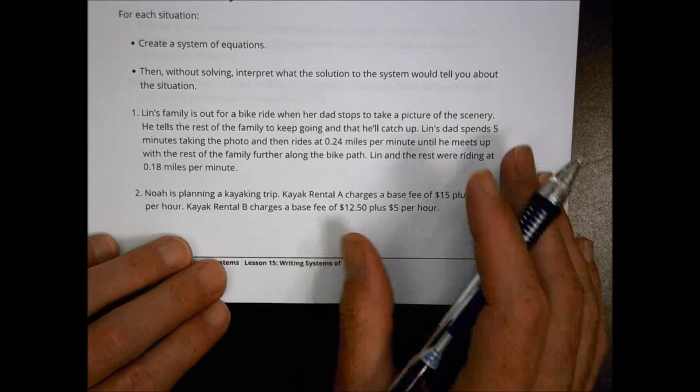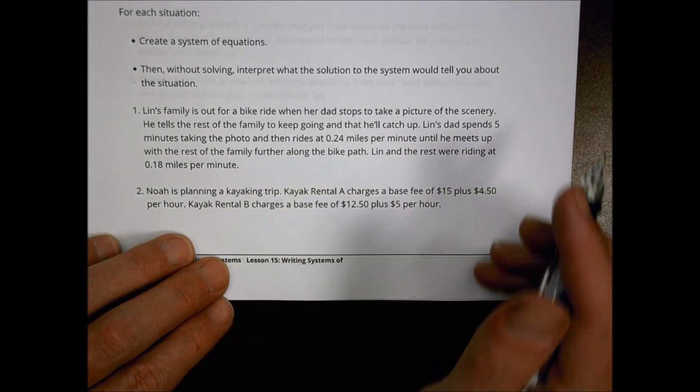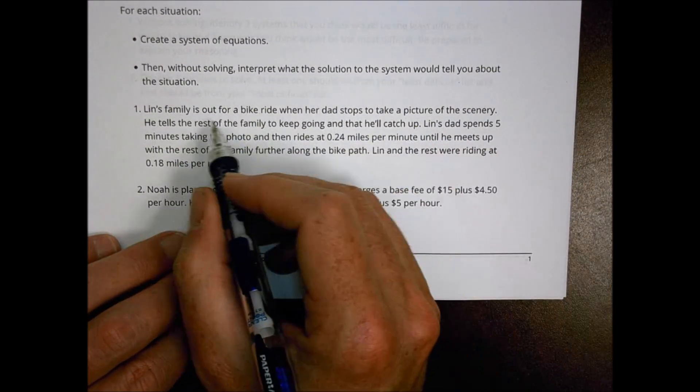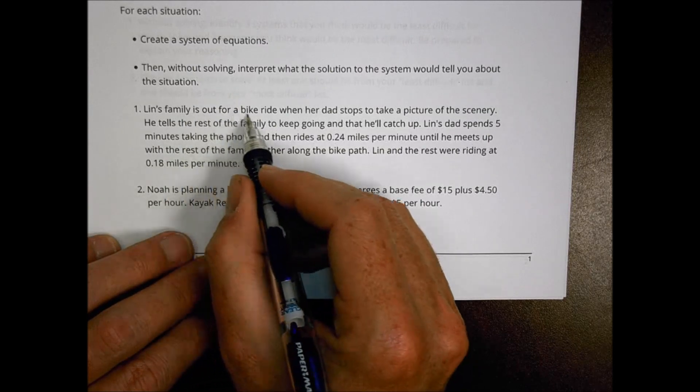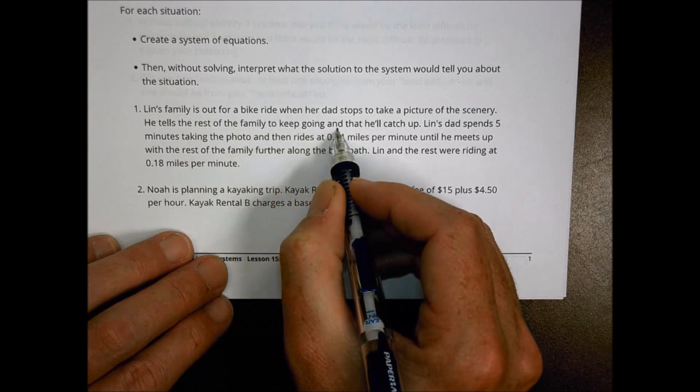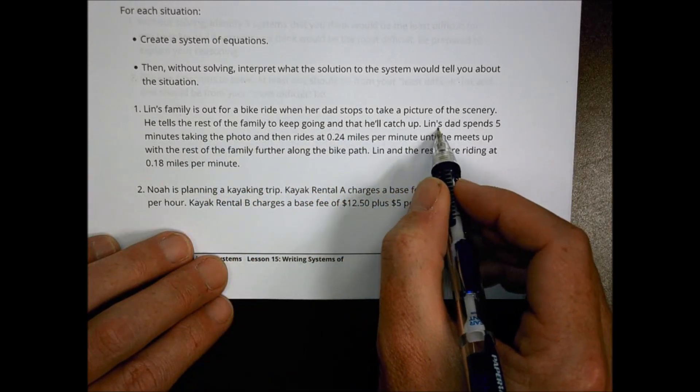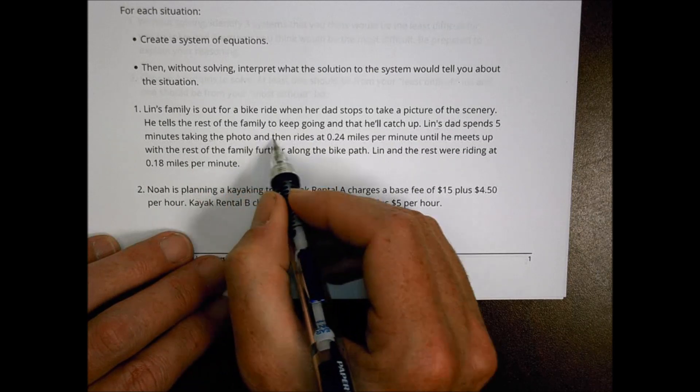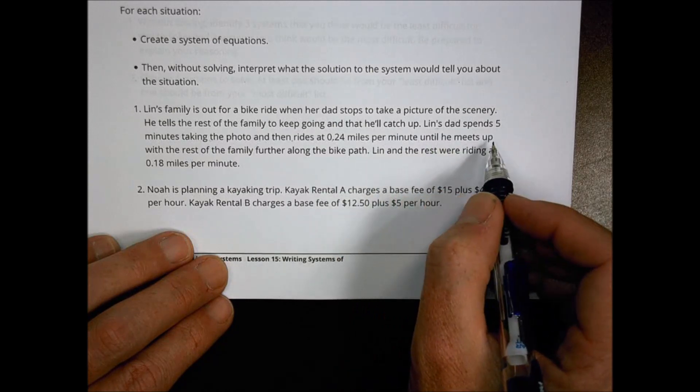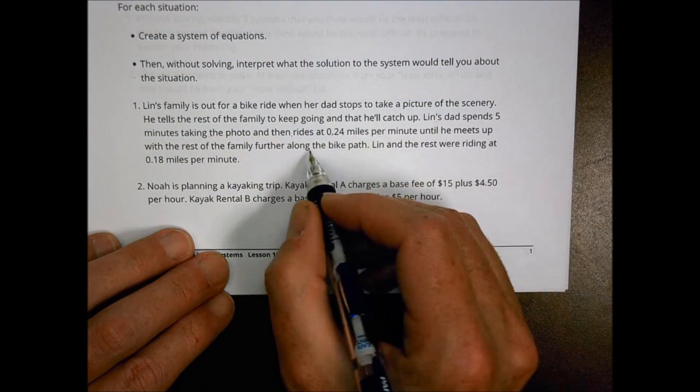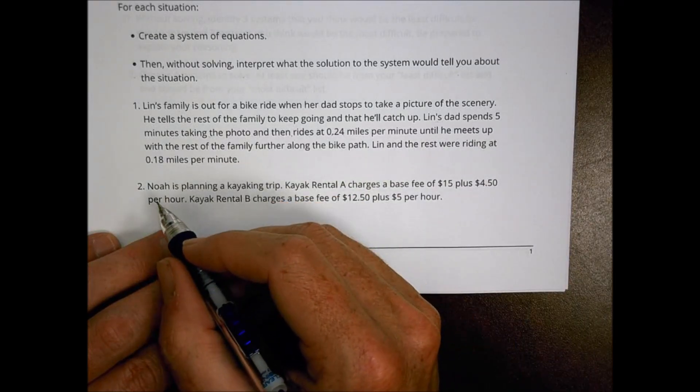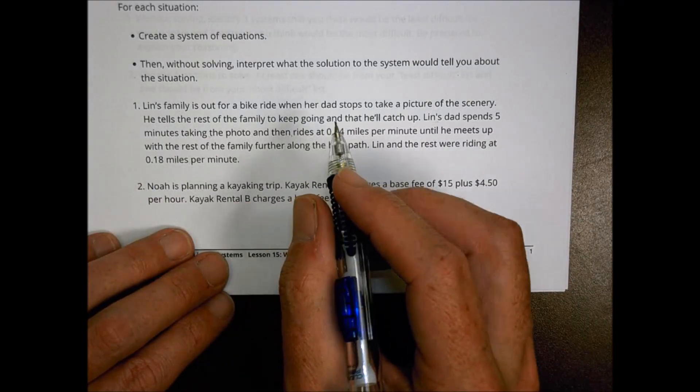So here's the first one. The first one's a little different. It says Lynn's family is out for a bike ride when her dad stops to take a picture of scenery. He tells the rest of the family to keep going and that he'll catch up. Lynn's dad spends 5 minutes taking the photo and then rides 0.24 miles per minute until he meets up with the rest of the family.